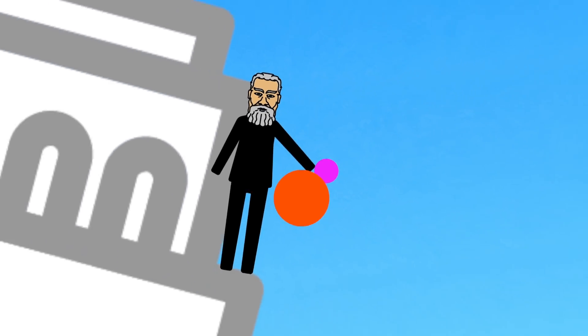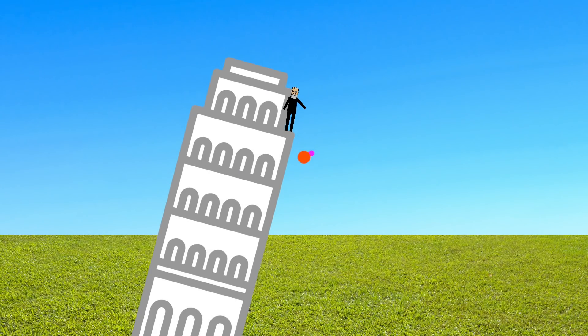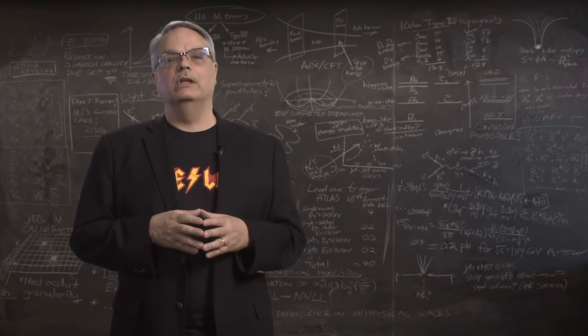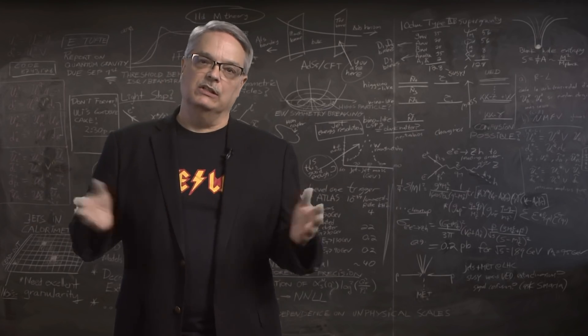Legend has it that Galileo dropped two balls, one heavier and one lighter, off the leaning tower of Pisa and saw that they fell identically. By the way, that probably didn't happen. He actually experimented with objects rolling down an inclined plane. But his conclusion was valid.